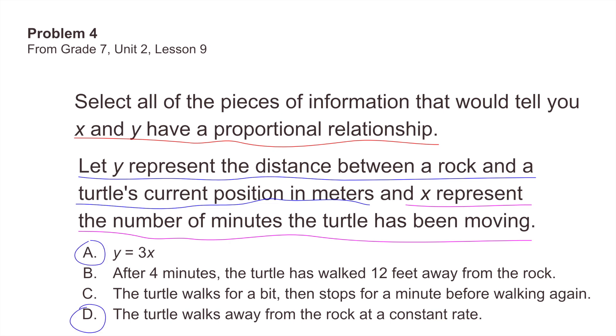I chose A and D. A and D have proportional relationships. Y equals 3 times x matches with D. D says that the turtle walks away from the rock at a constant rate, and y equals 3 times x represents a constant rate. I almost picked B, but then I noticed that B mentioned a distance of 12 feet and not 12 meters. The instructions mention meters, not feet.